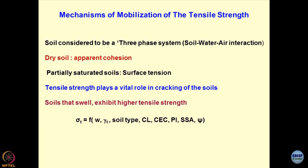We try to relate the tensile strength sigma t with many parameters. Tensile strength is a function of the moisture content of the soil and gamma t — the total unit weight of the material — which is a function of specific gravity and soil type corresponding mainly to texture. Cl is the clay content, so higher the clay content, higher the sigma t value. Other parameters include cation exchange capacity, plasticity index, specific surface area, and matrix suction. All these terms put together create the sigma t value.